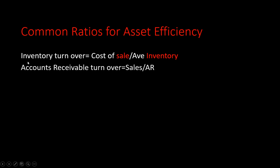The same concept applies to accounts receivable turnover. Accounts receivable is the denominator (the asset), and the relevant activity is sales — so the formula starts as sales divided by AR. However, since not all sales go to accounts receivable (some are cash sales), a better formula is credit sales divided by average accounts receivable.